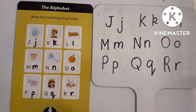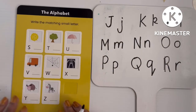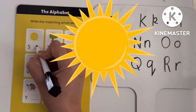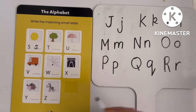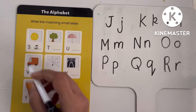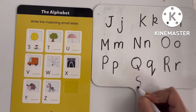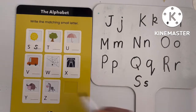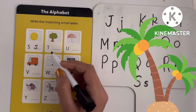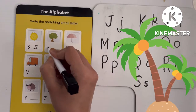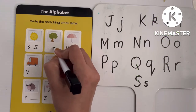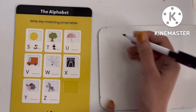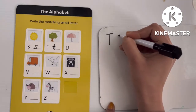Our next letter is S — S means sun. In capital we have S like this, and in lower we write S like this — they look similar. Next, T — T means tree. This is the capital letter T, and this one is the small letter t.